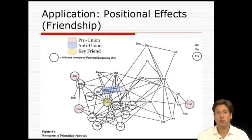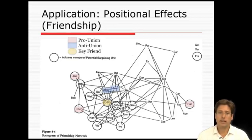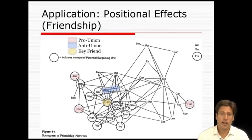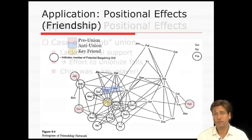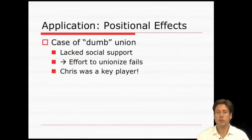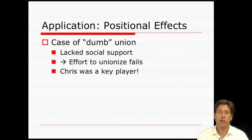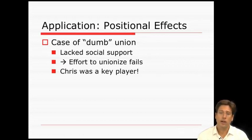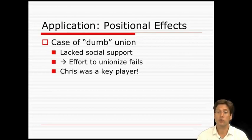The friendship network similarly shows the three pro-union players highlighted in red as peripheral. At the center is the informal leader and popular friend, Chris. The anti-union members are closer to Chris and likely have greater sway over his opinions. In sum, the case study uses interviews, surveys, and observational records to show how the unionization effort failed because pro-union players were peripheral to the informal organization — they neither co-opted the experts nor the popular individuals. Had they co-opted Chris and his close friends, they might have successfully unionized the firm.